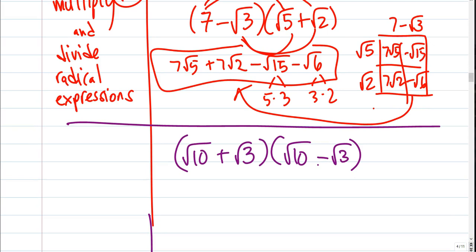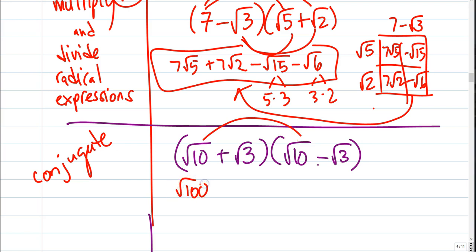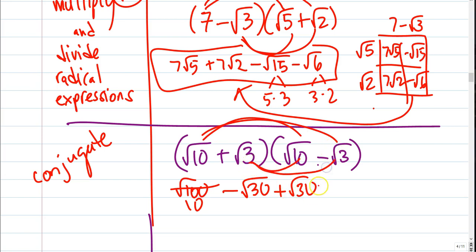The next one is a special one — this is called multiplying by its conjugate. That's when I have a plus b and a minus b. Something special is going to happen with the radicals. Let's just go ahead and do it: root 10 times root 10 is the square root of 100, which I'm going to rewrite as just 10. Minus 10 times 3 gives square root of 30, plus 3 times 10 gives square root of 30, minus 3 times 3 which is 9. The most common mistake is people will see that and just go, oh, 9.